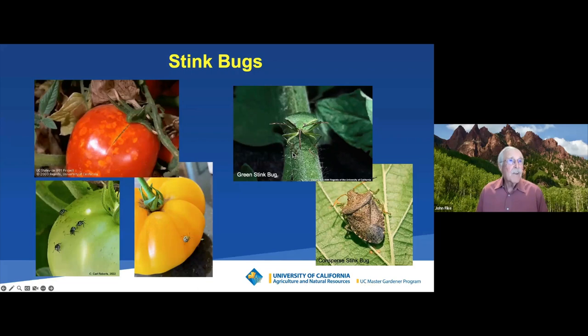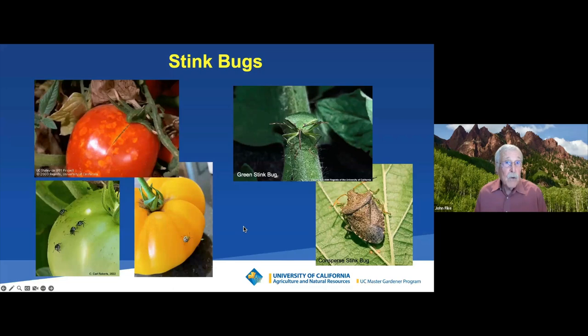If you have a weedy area around your garden, you might find stink bugs in the spring — they like to start out in winter in the weeds and then come over into your garden. Try to get rid of them by getting rid of weeds. If you find them, handpick them, squash them, put them in soapy water — insecticides don't really work against stink bugs.